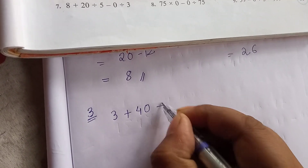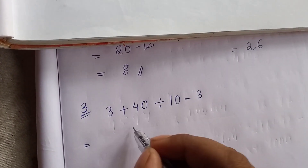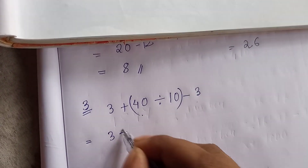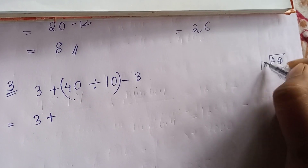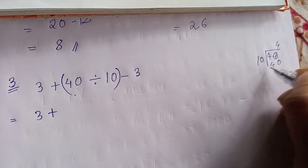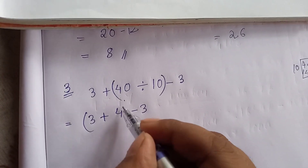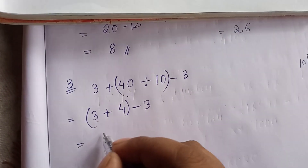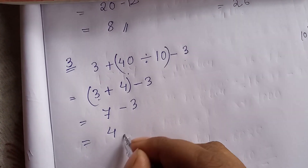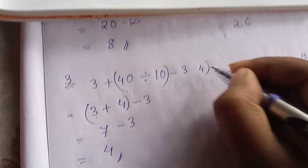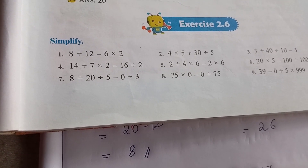Question number 3: 3 plus 40 divided by 10 minus 3. Division is present, so first divide: 40 divided by 10. 10 times 4 is 40, so the answer is 4. Now add: 3 plus 4 equals 7. Then subtract: 7 minus 3 equals 4. That is the answer.